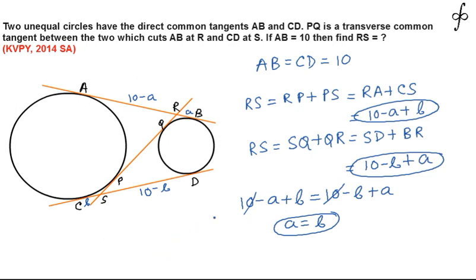Since A is equal to B, we can get the value of RS. We have calculated RS to be 10 minus A plus B and since we have proved that A equal to B, these two values will be cancelled out and we will get the value of RS to be equal to 10.